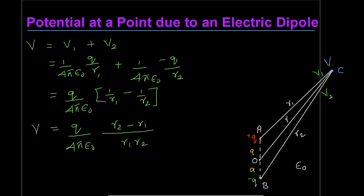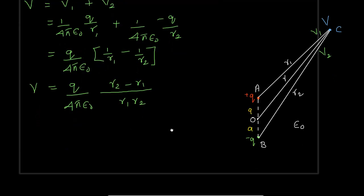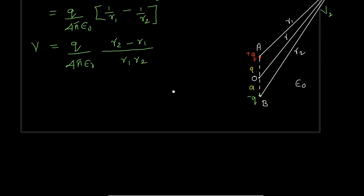This gives us the electric potential at C due to the electric dipole. Now let us simplify this equation in terms of R.